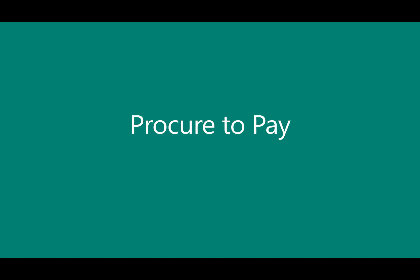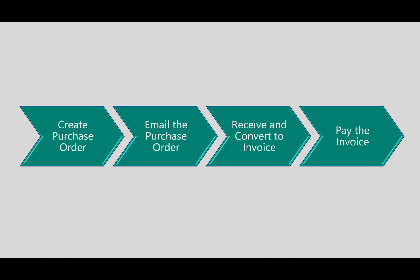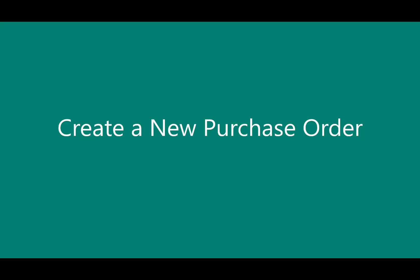In this demonstration, we'll review the process of procure to pay using Dynamics 365 Business Central. We will walk through four steps: first, we'll create the purchase order; then we'll email the purchase order to our vendor; then once we receive the goods, we'll receive it and convert that to a purchase invoice, and then eventually pay the invoice.